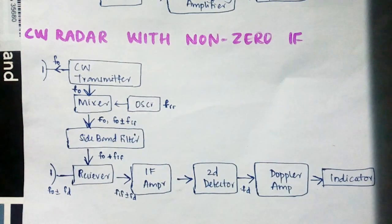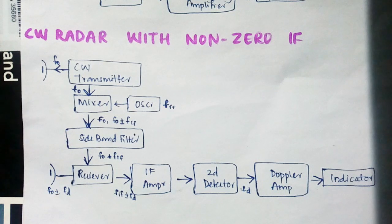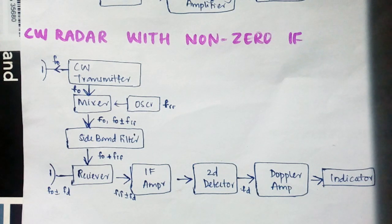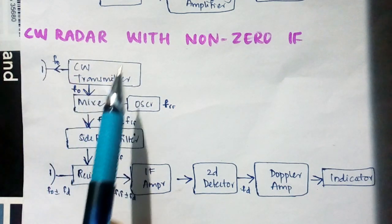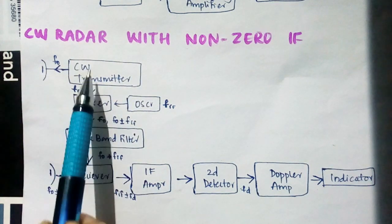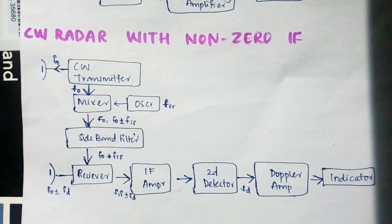Non-zero IF is a little more complicated, but similar to the above section. Here the transmitting section has only a CW transmitter with transmitting frequency f0.